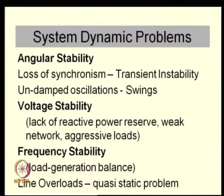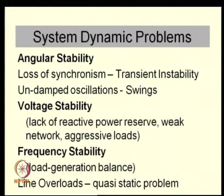Angular instability essentially consists of two phenomena: loss of synchronism, which is a large disturbance phenomenon also called transient instability; and undamped oscillations or power swings due to small disturbances. The damping of power swings can be improved by making changes in controllers — augmenting or having auxiliary controllers for controllable elements in the power system, like the excitation system in a generator or HVDC power flow control — to ensure that these swings are actually stable.